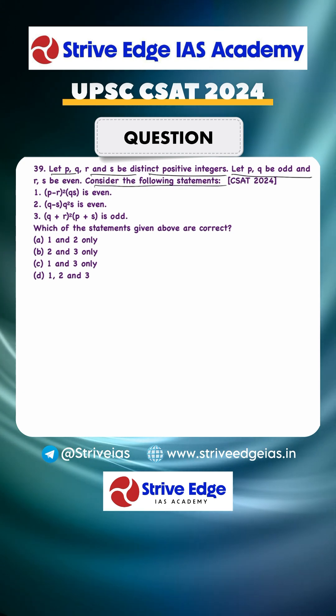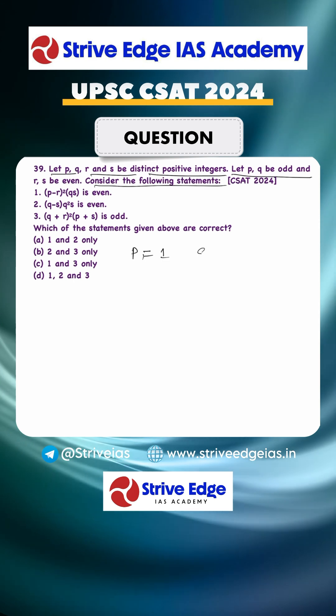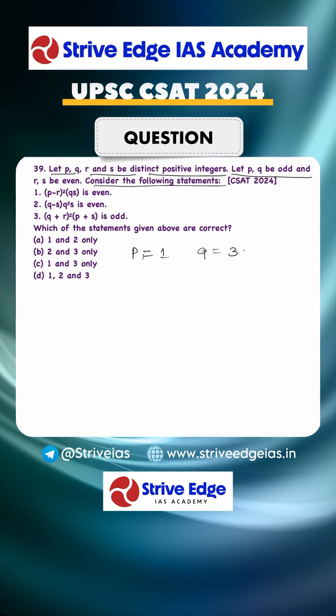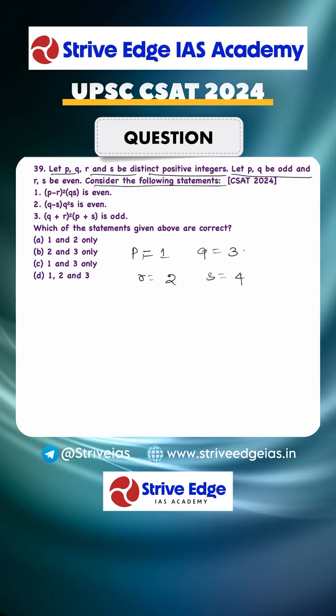So, P and Q equals to odd. P can be 1. Q is also odd, so Q can be 3. Then R equals to even, so take this as 2. And S is even also, take this as 4.